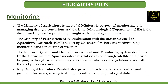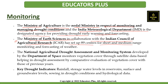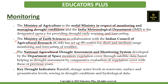Now let's discuss how drought can be monitored. The Ministry of Agriculture in India is the nodal ministry for monitoring and managing drought conditions. The Indian Meteorological Department is the designated agency for providing the drought early warning system and forecasting. The Ministry of Earth Sciences in collaboration with the Indian Council of Agricultural Research has set up 89 centers for short and medium range monitoring and forecasting of weather. The National Agricultural Drought Assessment and Monitoring System, developed by the Department of Space, monitors vegetation cover through satellite data, helping in drought assessment by comparative evaluation of vegetation cover with those of previous years. Key drought indicators include rainfall shortage, water levels in reservoirs, surface and ground water levels, sowing in drought conditions, and hydrological data.